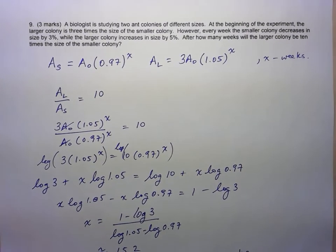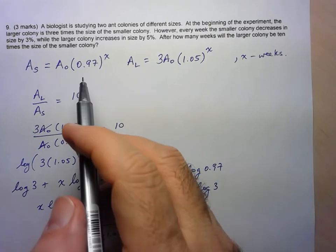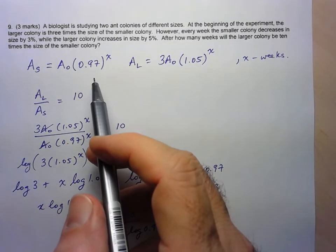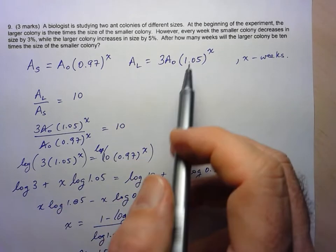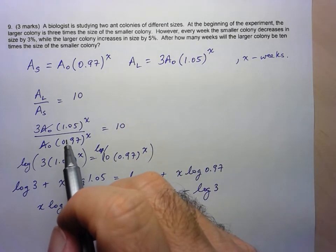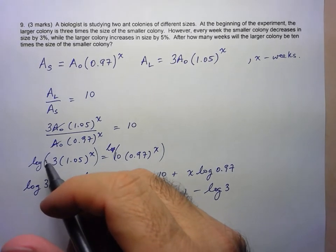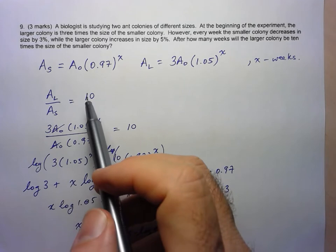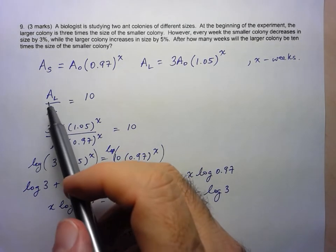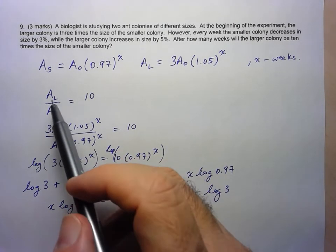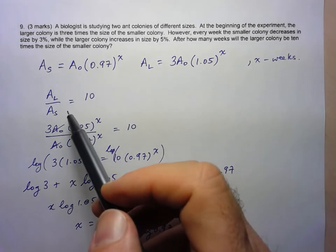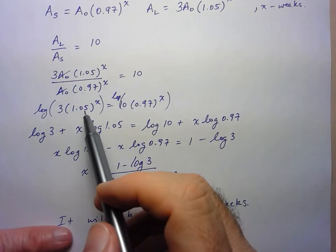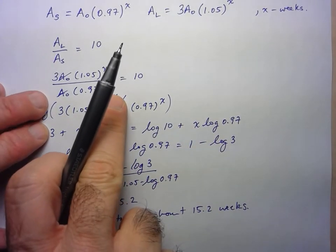Okay, let's do a recap here. So first of all it made sense to come up with models for each of the populations, and that's just our regular exponential models, one's a decay one's a growth. And then to realize that what we had to determine was when AL was going to be 10 times AS. So I could have written it as a ratio or even written as AL equals 10 AS, just the same.